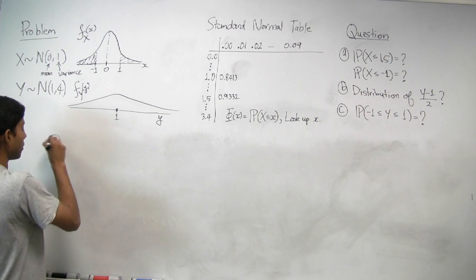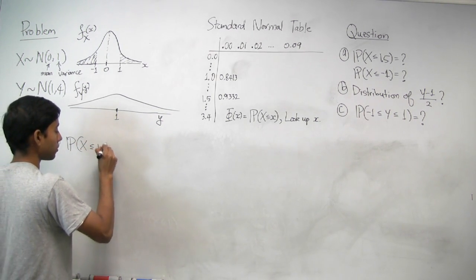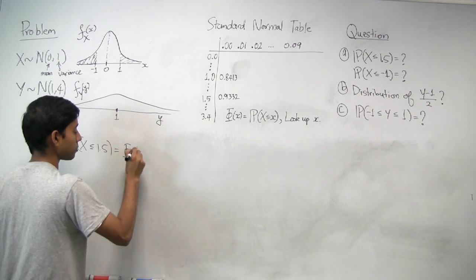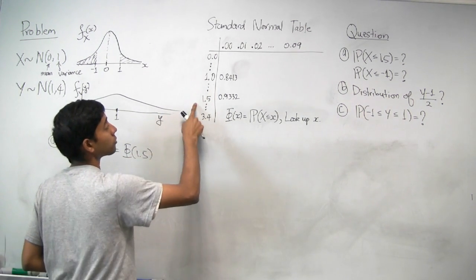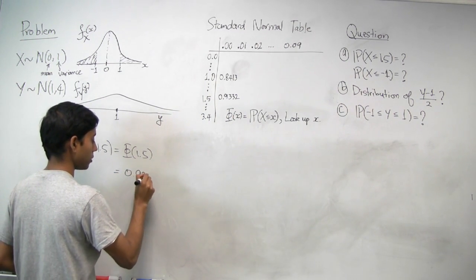So for part A, we're asked what's the probability that X is less than or equal to 1.5? That's exactly phi of 1.5, and we can look that up 1.50 directly, and that's 0.93 is the lead to.